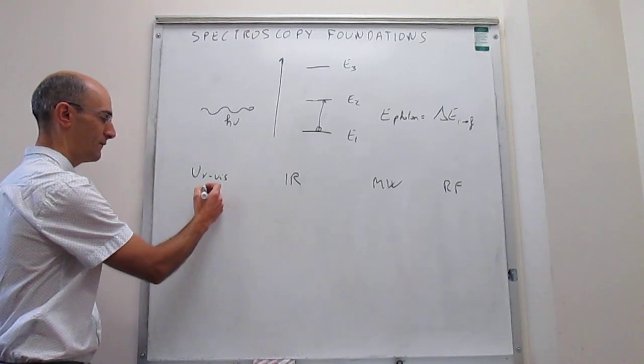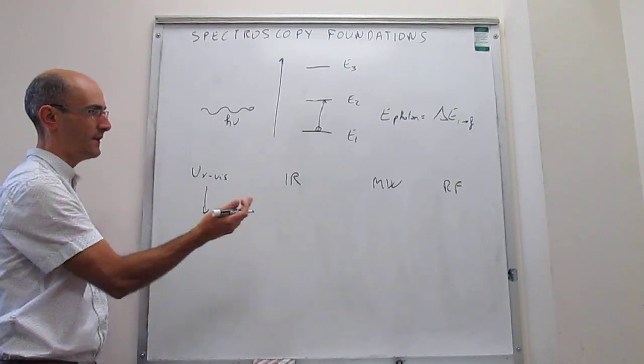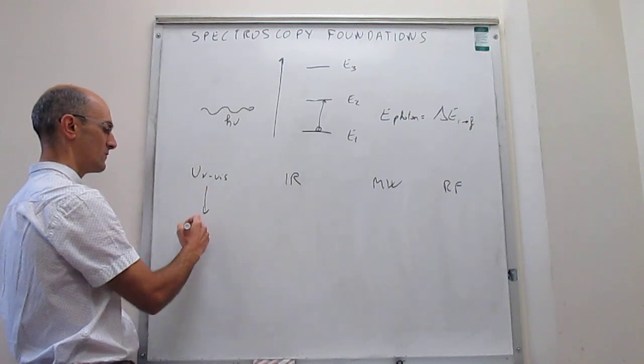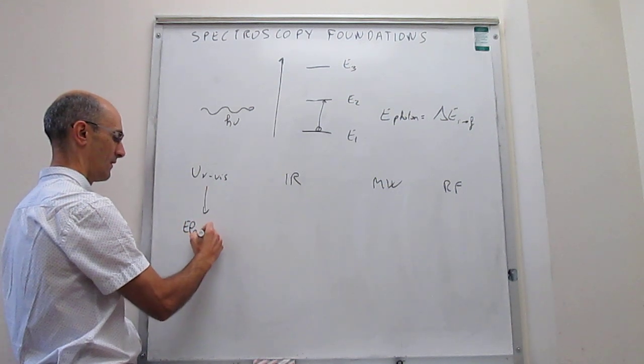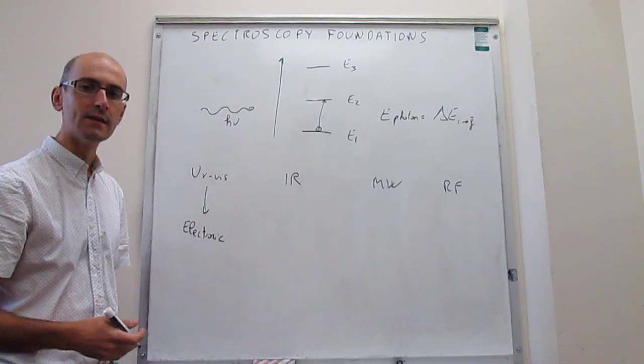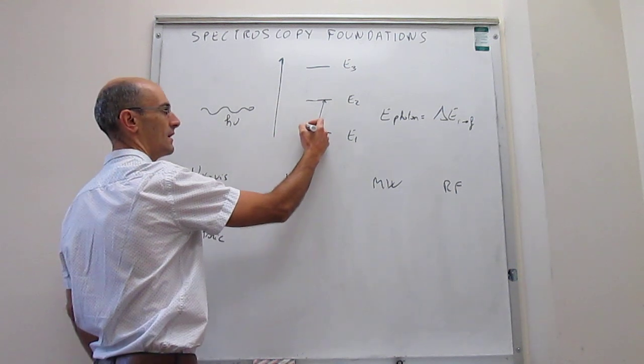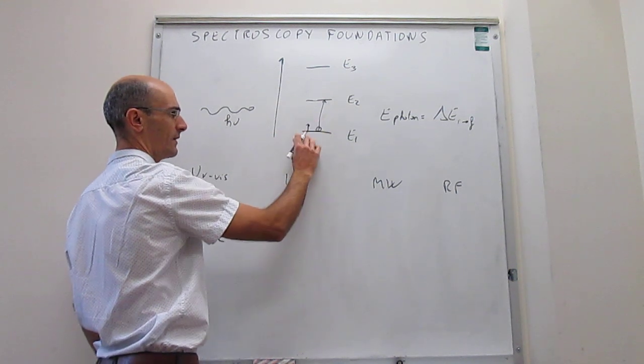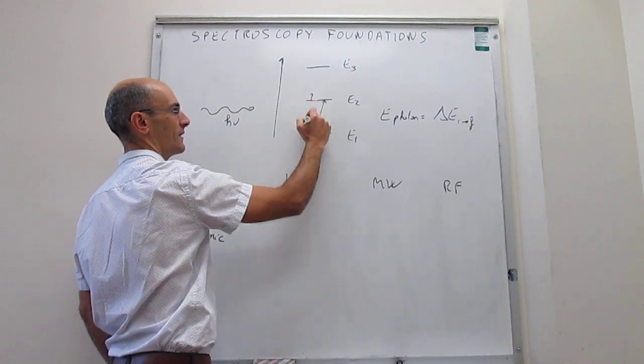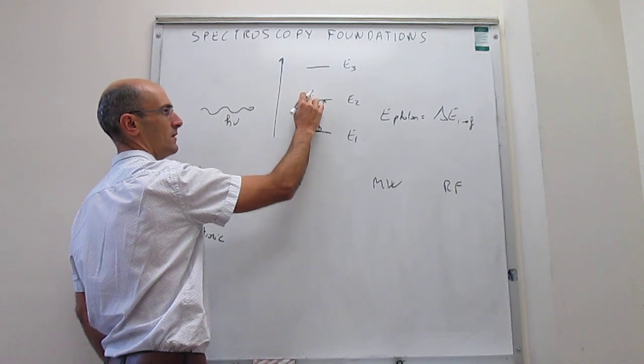So the type of motions that you can promote in UV-Vis spectroscopy with UV-Vis photons are actually electronic. So we can go back to this generic diagram, and then say that what really is going on here is that you may have some electron in a low energy state, and what you're doing is you're promoting an electron to a high energy state through absorption.